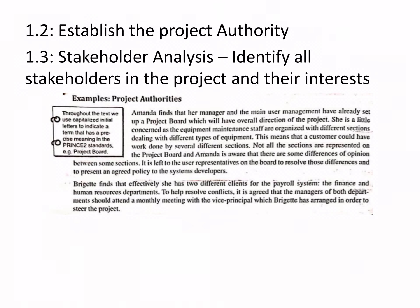Step 1.2: establish a project authority — identify who is going to be authorized, who will be the project team leader, what management levels will be in place. Project authority ensures that all objectives are unanimously being achieved. This is a preliminary aspect of any project. Step 1.3: identify stakeholders and perform stakeholder analysis — identify all people who will be affected by or have some interest in the project.